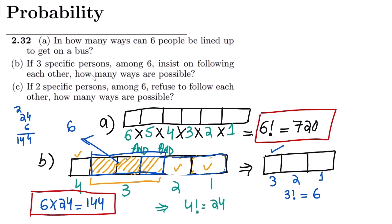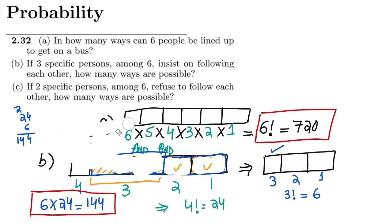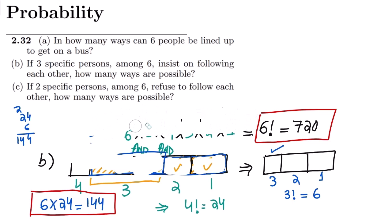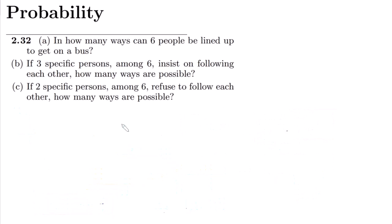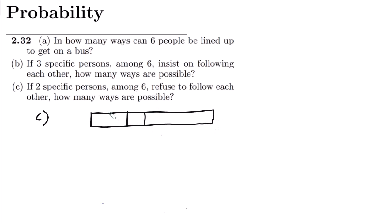That concludes Part B. The last part, Part C: if two specific persons among six refuse to follow each other, how many ways are possible? In Part B, three persons insisted on following each other, but now two specific persons are refusing to follow each other. Let me clear the board and solve this new part.